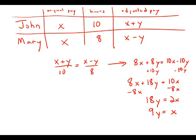So in other words, John's original pay X in terms of Y is 9Y and this is answer choice E.